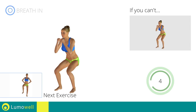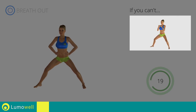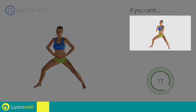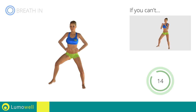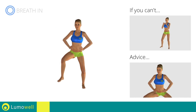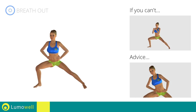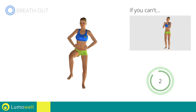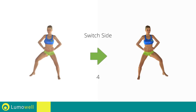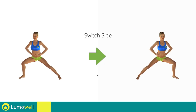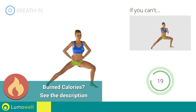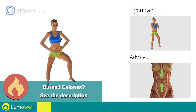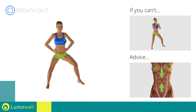Next exercise: side lunges with raised leg. Go! If you can't do it, don't lift your leg when you come back up. Be sure not to bend your torso sideways — your back must always be very straight. Switch sides in the shortest time possible. Keep your abs constantly tight during the exercise to improve balance.